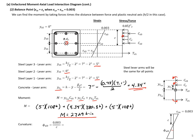Finally, we can calculate the curvature at this point, which is the slope of our strain diagram: top strain 0.003 divided by c = 7.1 inches, giving a curvature of 4.2 × 10⁻⁴ radians per inch.